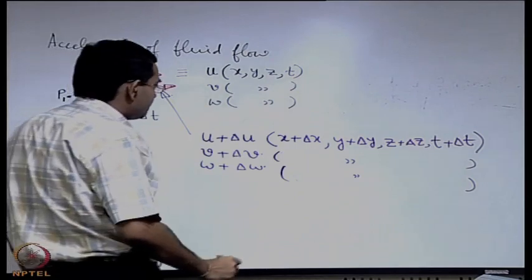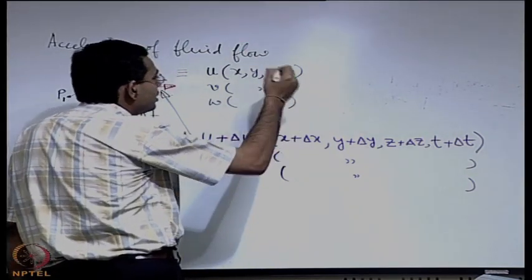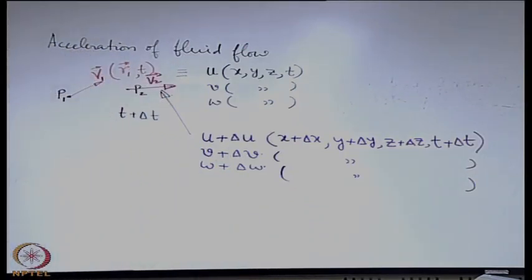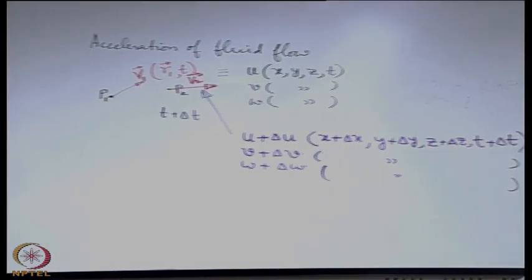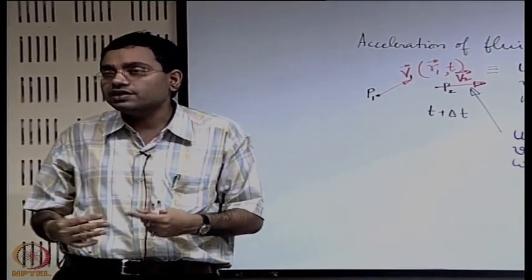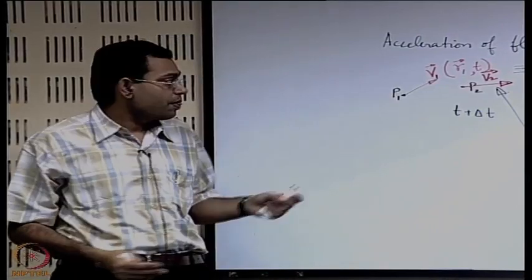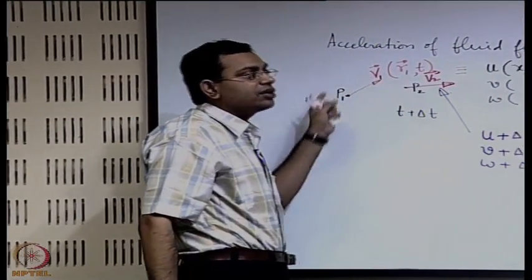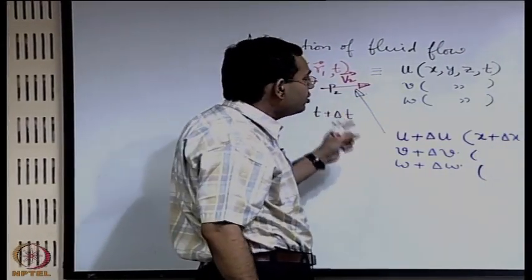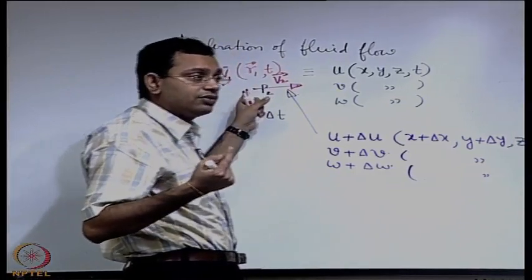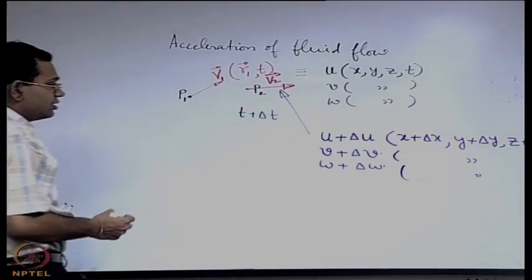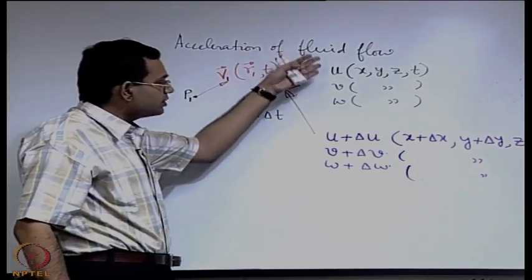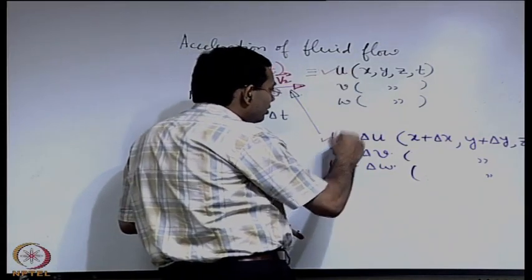There is an original velocity in three components and a changed velocity in three components. The basic definition of acceleration is based on a Lagrangian reference frame — the time rate of change of velocity of an identified fluid particle, which was at p1 and is now at p2. All basic definitions in Newtonian mechanics are based on Lagrangian mechanics. For simplicity, let us write just the x component; similar expressions hold for y and z.